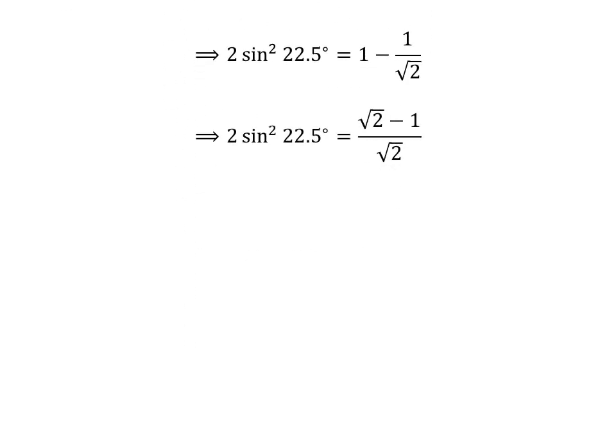1 minus 1 upon square root of 2 is equal to the square root of 2 minus 1 upon square root of 2. Multiplying the numerator and the denominator of the fraction by a common factor does not change the value of the fraction. So, in the right hand side of the above equation, the common factor square root of 2 has been multiplied in the numerator and the denominator.